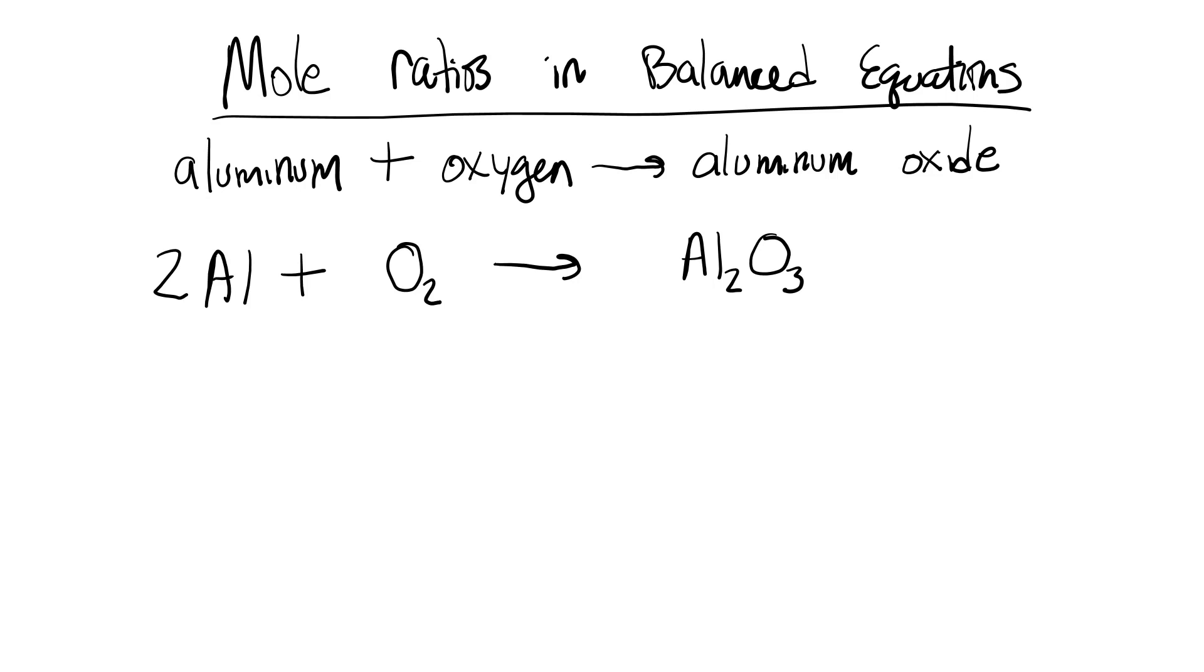We can see that the oxygen comes in pairs on the reactant side, as in O2, and on the other side it comes in 3s. So we could switch those numbers. You could put a 3 in front of here and a 2 in front of here, and now we have the oxygen balanced.